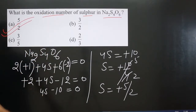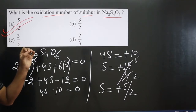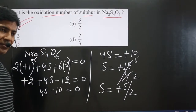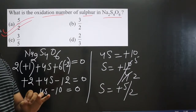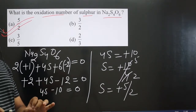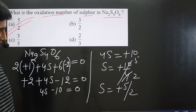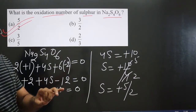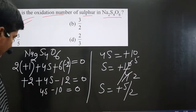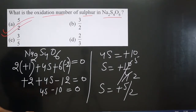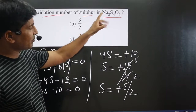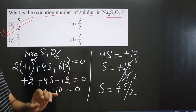Now pay attention carefully. This question asks to calculate the oxidation number of sulfur. But if the question asks to calculate the oxidation state of sulfur — and I have already given a lecture on the difference between oxidation number and oxidation state — then you need to check the environment of each sulfur by drawing the structure.